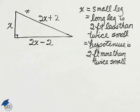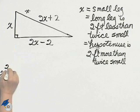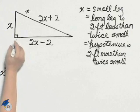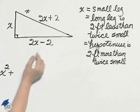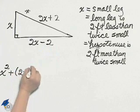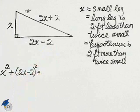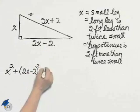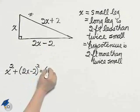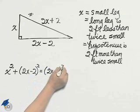Using the Pythagorean theorem, we have that the leg squared, which is x squared, plus the leg squared, which is (2x minus 2) squared, equals the hypotenuse squared, which is (2x plus 2) squared.